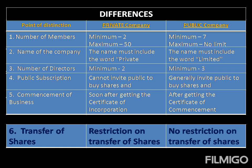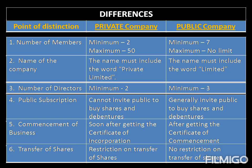The sixth point of difference is with regards to the transfer of shares. In a private company, since no outsider is allowed entry, there is a restriction on the transfer of shares, whereas in a public company, the transfer of shares is free flowing.